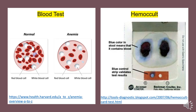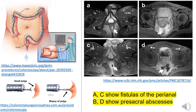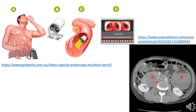This slide shows the blood test. With anemia, patients have very few red blood cells. For the hemoccult, the blue color in the stool means it contains blood. To the right is the MRI — A and C show fistulas of the perianal region and B and D show presacral abscesses. To the left is a colonoscopy showing the instrument coming out of the tube to get a tissue sample. To the right is a CT scan showing the axial image of a stricture, so the doctor is looking down through the body of the patient. And to the left, you can see the capsule endoscopy.